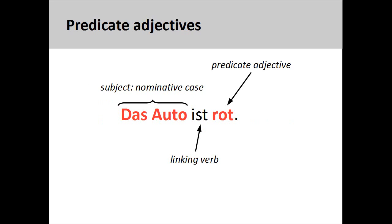Predicate adjectives are also in the nominative case. Predicate adjectives are simply adjectives that appear after a linking verb in a sentence and, in essence, provide more information about the subject. In the sentence 'das Auto ist rot' — the car is red — 'das Auto' is the subject of the sentence and therefore in the nominative case. The adjective 'rot' is also in the nominative case as it appears after the linking verb 'ist'.